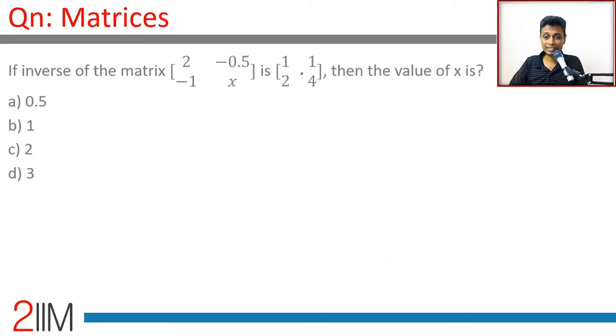The inverse of the matrix is this, so if you multiply this with this we should get the identity matrix. Quite simple. So if you multiply this with this, the first row first column is going to be 2 into 1 minus 0.5 into 2. We're not interested in that, that will be 1.